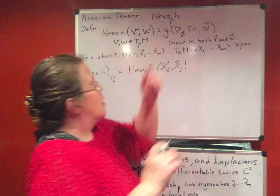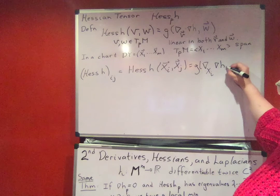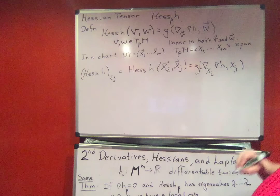So this Hessian of h_ij is Hessian of h x_i x_j, so let's copy it over using this g here. It is g of gradient covariant derivative in the direction x_i of grad h, comma, and then the w is x_j.